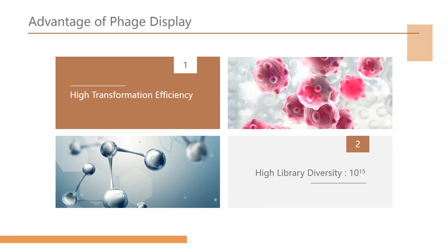Ribosome display offers two advantages over cell-based methods such as phage or cell surface display. First, the efficiency of transformation imposes a restriction on library diversity for cell-based systems; because ribosome display is in vitro, this does not apply — the system has high transformation efficiency. Second, by including PCR as an integral step in the procedure, ribosome display makes PCR-based mutagenesis strategies convenient.